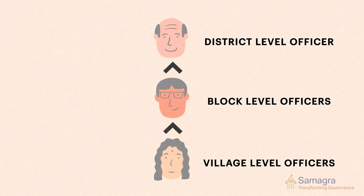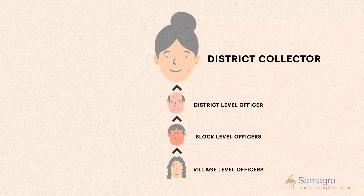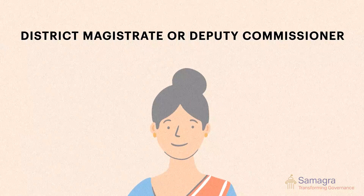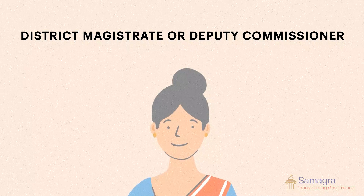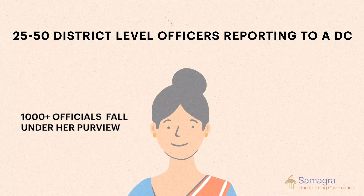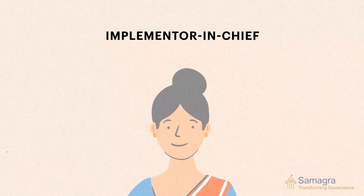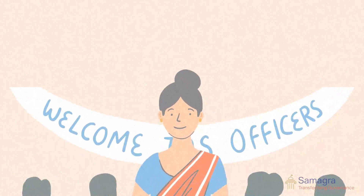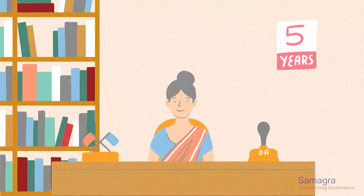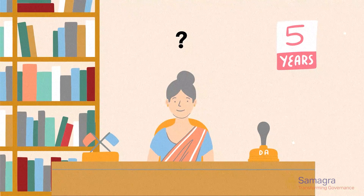In terms of upward reporting, the district level officer of each department reports to an officer called the district collector or DC — also known as the district magistrate or deputy commissioner in different states. There may be 25 to 50 district level officers reporting to a DC, and she is the one who leads the district administration and is the state executive's implementer-in-chief within a district. The job of being a DC is invariably given to a new joinee to the Indian Administrative Services, and a DC typically spends 4 to 5 years in a district.